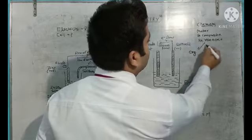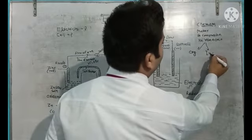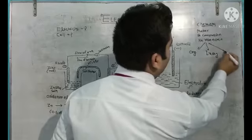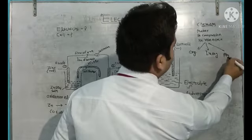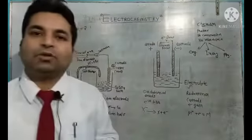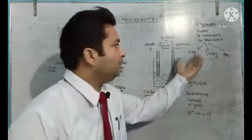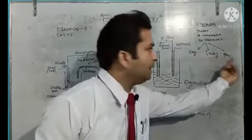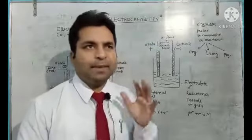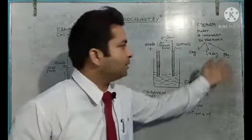The second part is inorganic chemistry, and the third part is physical chemistry. So chemistry is classified into three parts: organic chemistry, inorganic chemistry, and physical chemistry. We will understand one by one what each branch is.